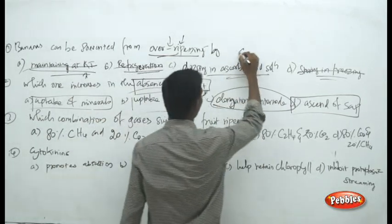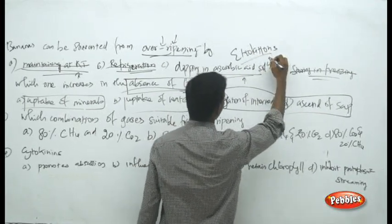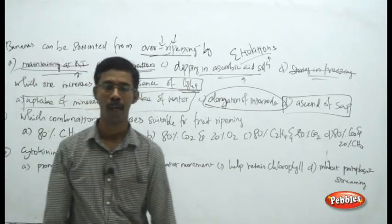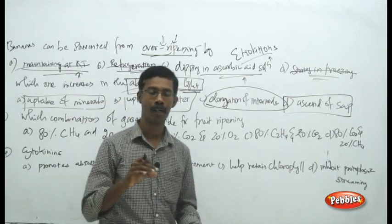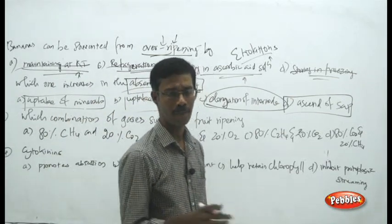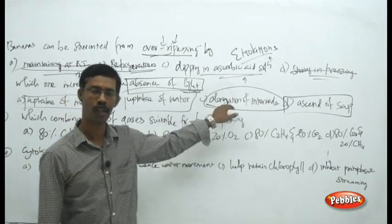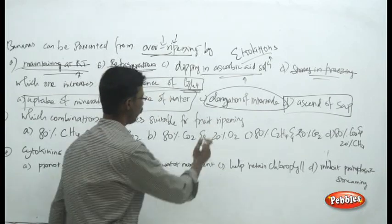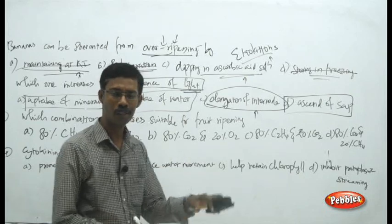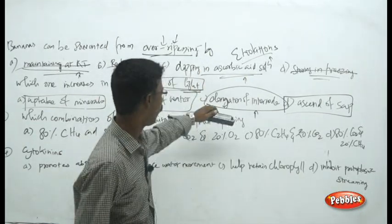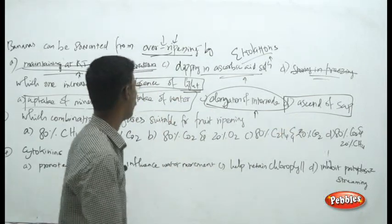That process is called etiolation. Etiolation means in the absence of light, stem elongation happens, patches of colour appear in leaves, and branched leaves appear. Internode means the intersection in the stem region. Elongation of internode — etiolation — will happen during the absence of light or in dark conditions.